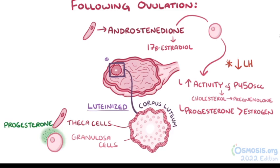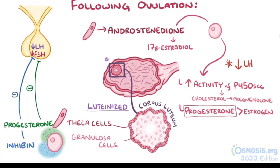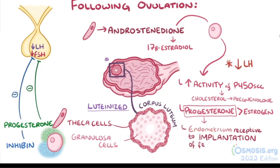Progesterone acts as a negative feedback signal on the pituitary, decreasing release of FSH and LH. At the same time, luteinized granulosa cells begin secreting inhibin, which similarly inhibits the pituitary gland from making FSH. Both of these processes result in a decline in estrogen levels, meaning that progesterone becomes the dominant hormone present during this phase. Together with decreased estrogen, the rising progesterone level signals that ovulation has occurred and helps make the endometrium receptive to the implantation of a fertilized gamete.